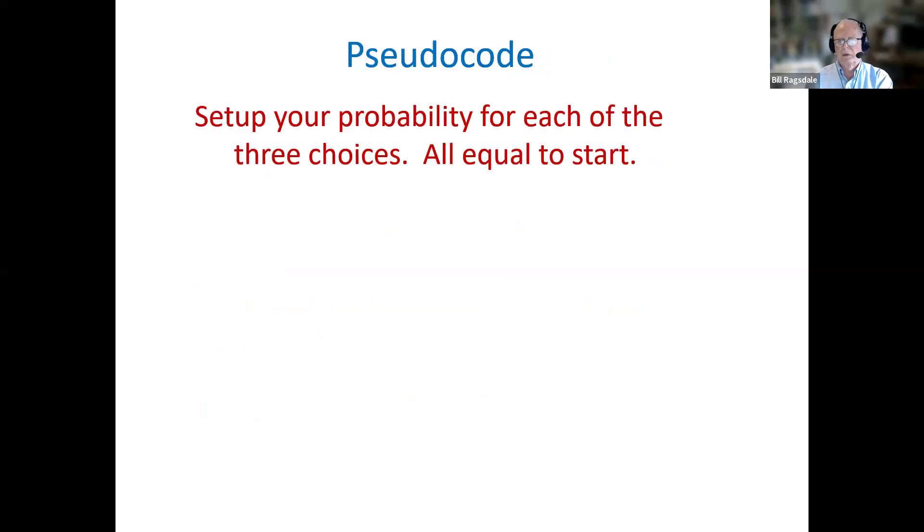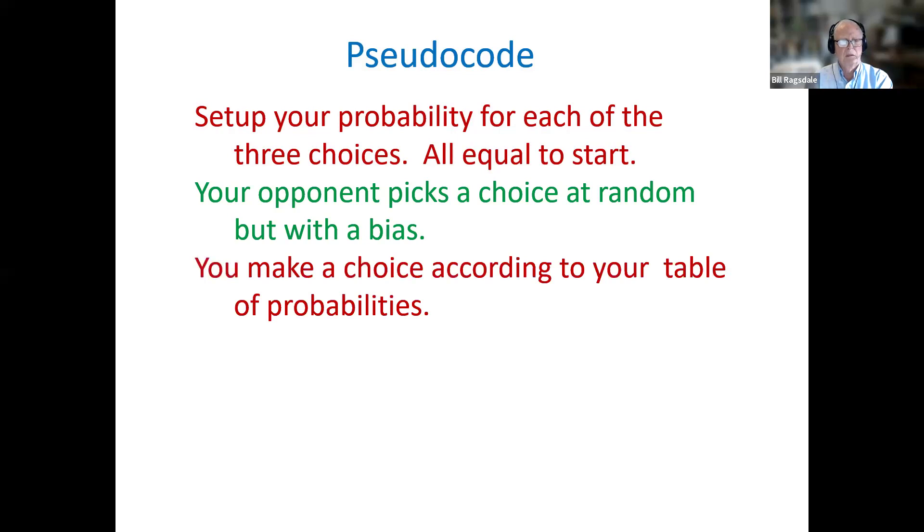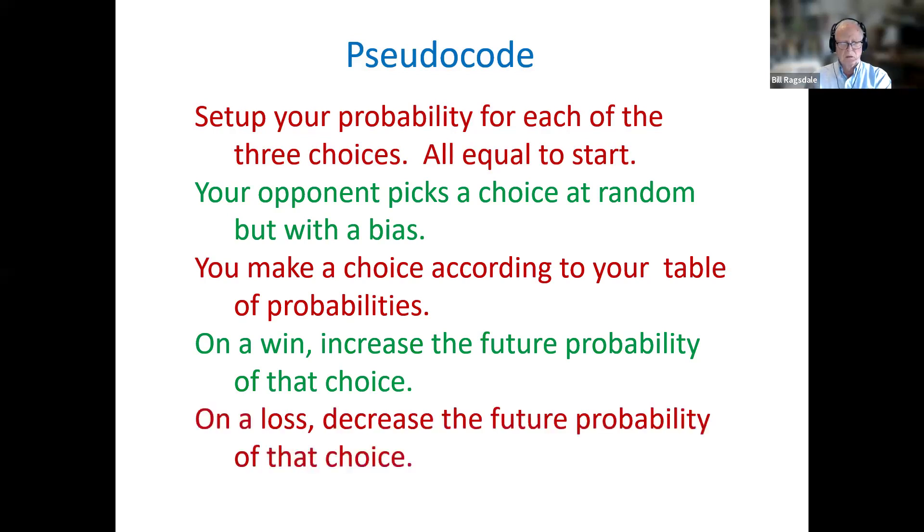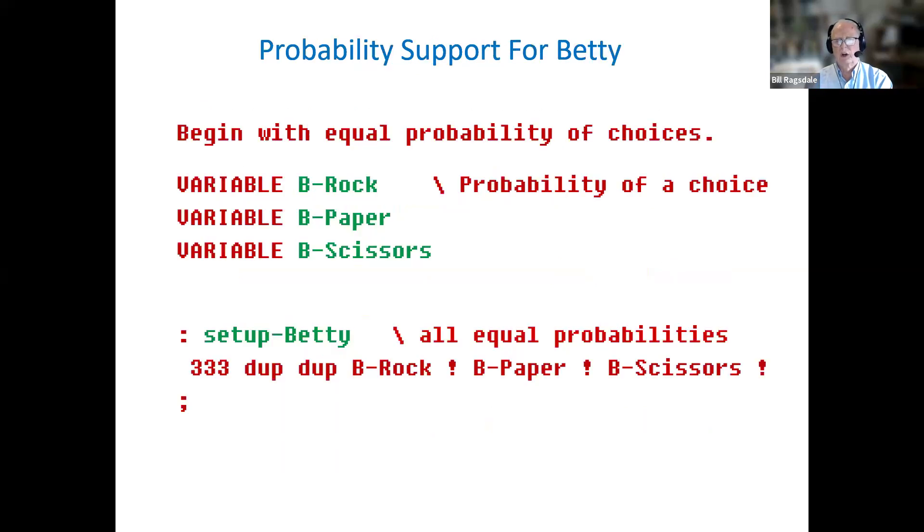The code that is underlying all of this is, first, we set up the probability of the choices. And in this case, we're going to have a bias for Alan, and Betty will be responding to Alan's choices. Your opponent will pick the choice at random, but with the bias for Alan, Betty will then make a choice according to her table of probabilities. On a win, Betty will alter her table of probabilities slightly. On a loss, again, she'll decrease the future probability of an outcome. And notice we say slightly, because you want to make the choices over a long period of time rather than abruptly. If the choices are too abrupt, you'll end up having an oscillation switching between strategies. So we will see that the changes are done slowly over a large number of games.